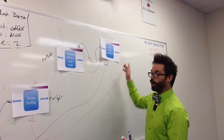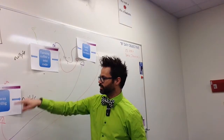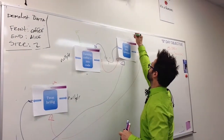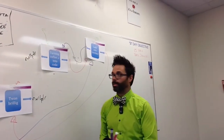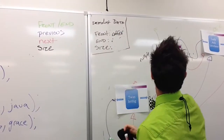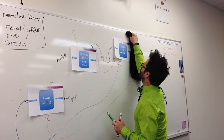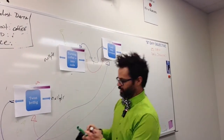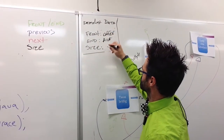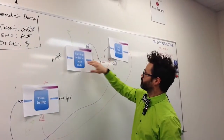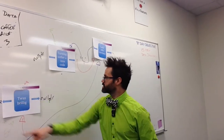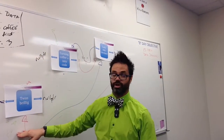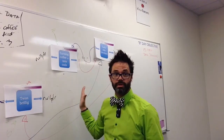The last step is I have to make sure end is still correct. End is still pointing to Alice because Alice's next is pointing to null. And my size goes up by one to three. So we have: front goes to next goes to next — that's end. And previous goes to previous goes to previous — we're at front. My size is updated. I don't have to adjust end here because it hasn't changed since I just inserted in the middle.